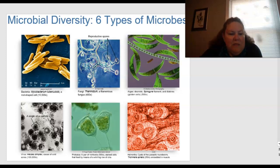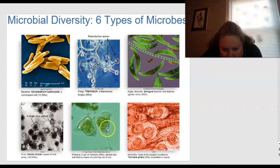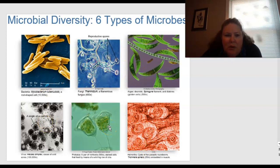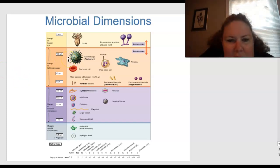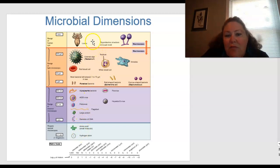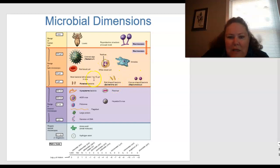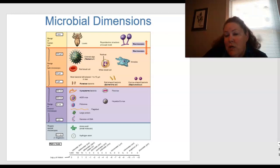There are six different types of microbes: bacteria, fungi, algae, viruses, protozoa, and helminths. In terms of microbial dimensions, some like locusts are macroscopic — you can see them with your eyes — while others like amoebas, cocci, rods, and spirochetes are microscopic and require a microscope to see. Going even smaller, you reach the building blocks such as amino acids and hydrogen atoms. That covers the range from big macro to small micron.